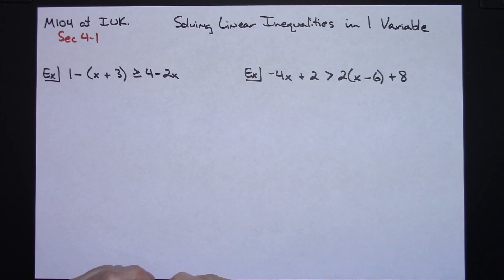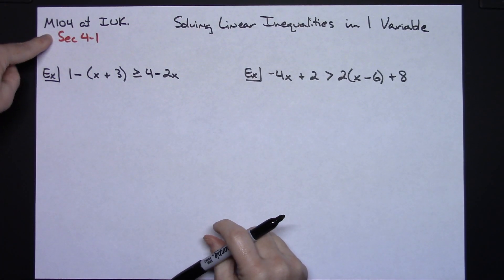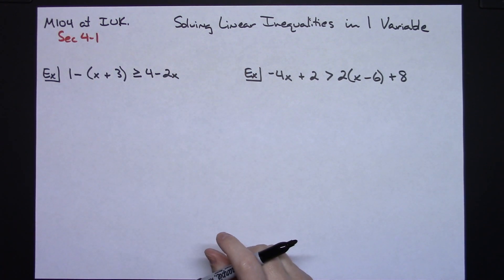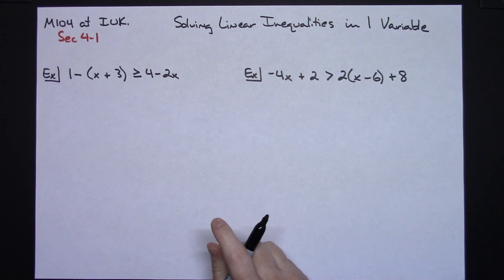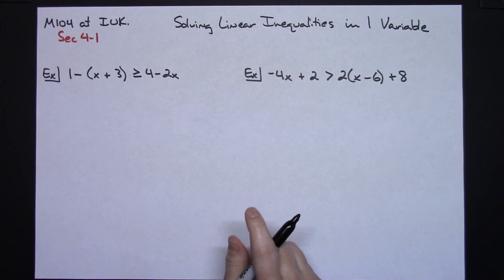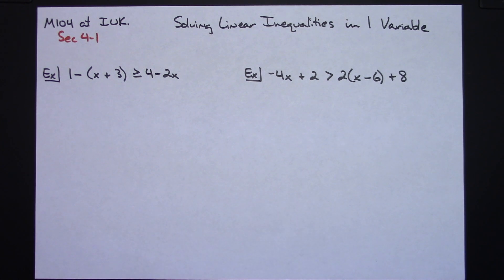In this video I'm going to be specifically making it for my M104 classes at IUK. We are going to be taking a look at solving linear inequalities in one variable. This is topics that come in section 4-1. In this video, to keep it short, we'll just do a couple of different examples to get you introduced to this idea.